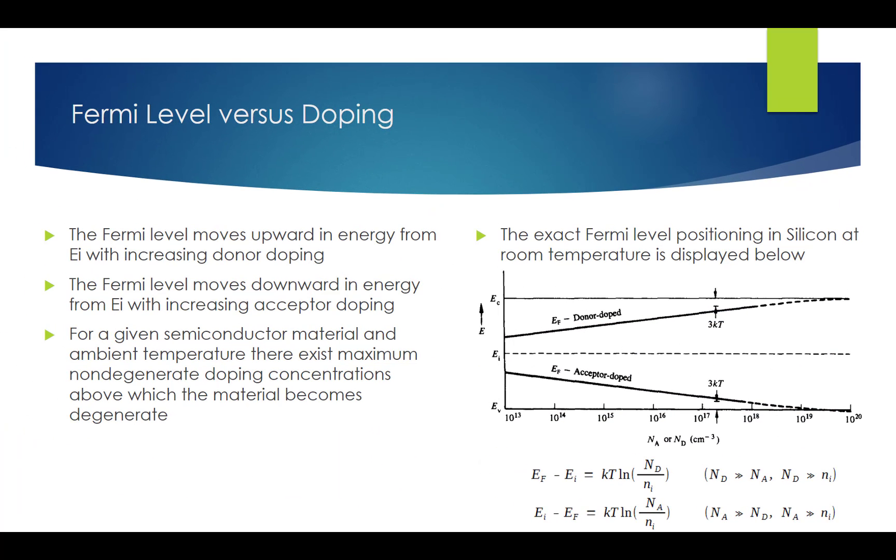From the previous calculation for Fermi level EF in doped semiconductors, we can see that the Fermi level moves systematically upward in energy from EI with increasing donor doping. It also shows that the Fermi level moves systematically downward in energy from EI with increasing acceptor doping.